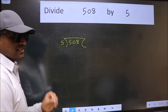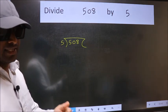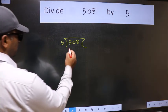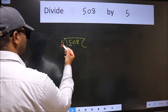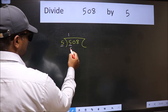This is your step 1. Next, here we have 5, here also 5. When do we get 5 in the 5 table? 5 once 5.